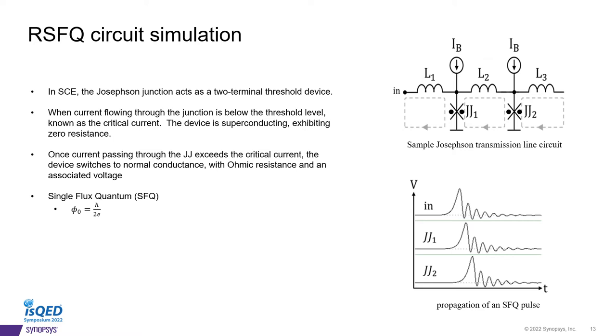In the previous slide, we call it Icrit. Then the device is in superconducting state. They will store the information and have zero resistance. Then once the current passes through the threshold, then the device leads to normal conductance. And then you get the resistance and now the signal propagate. And the signal propagation is always in the SFQ, the single flux quantum. The graph in the bottom shows how the single flux quantum propagate from input to the first JJ and the second JJ.